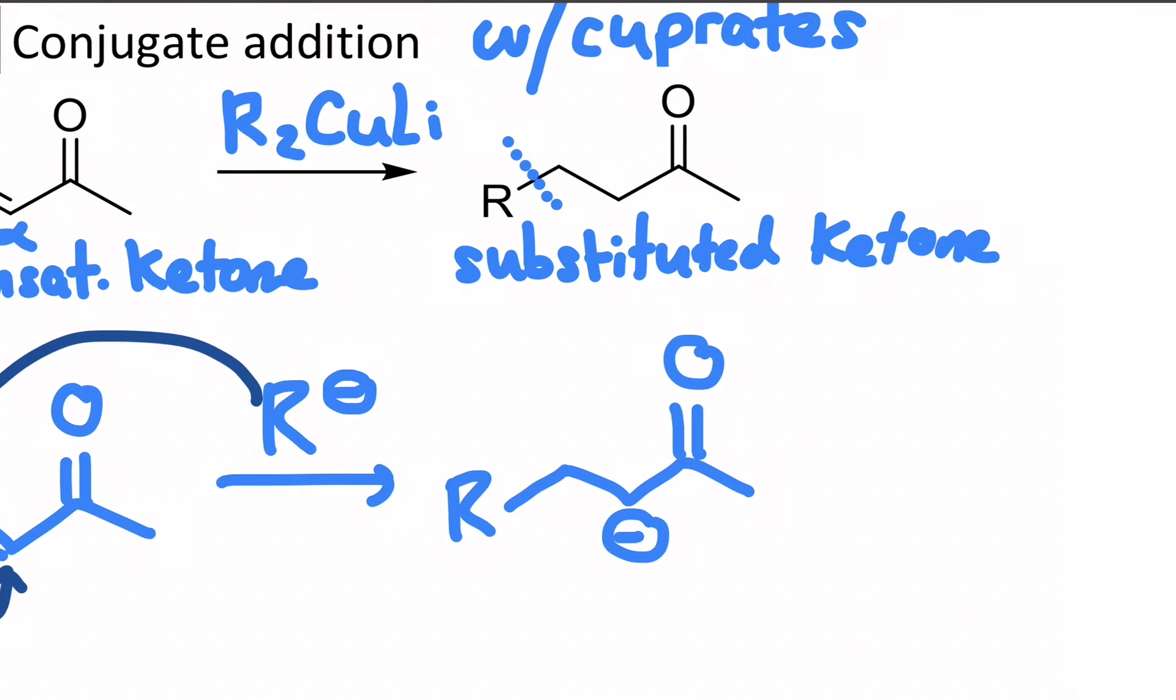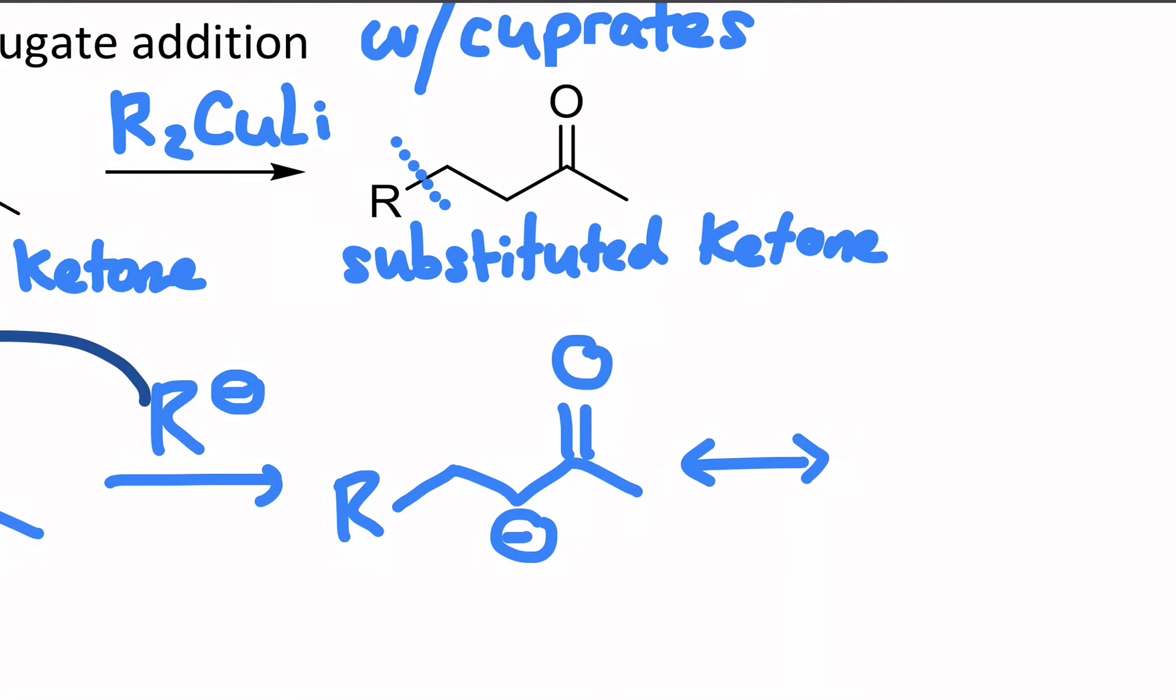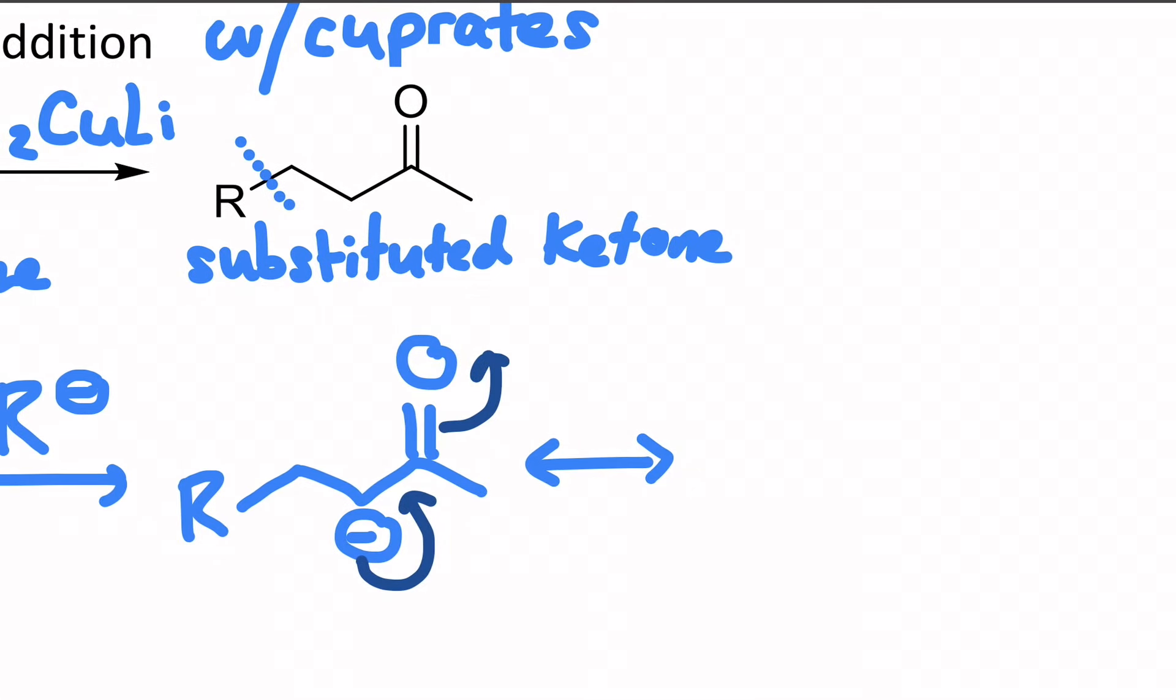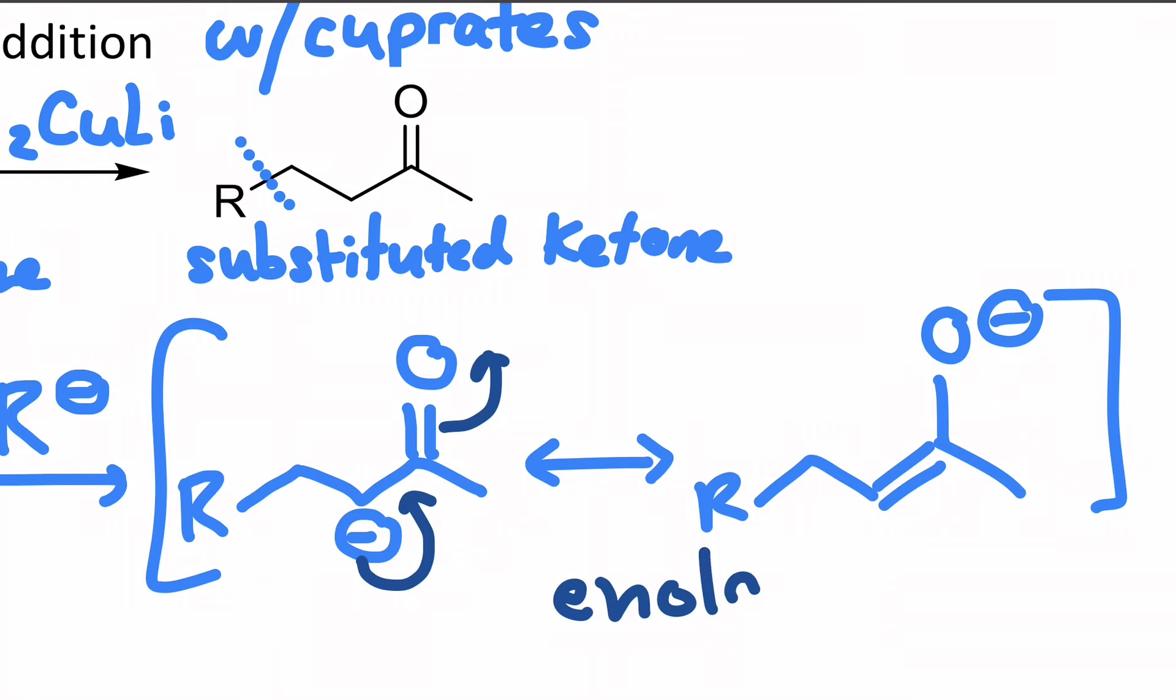And this is resonance stabilized. We can bring that negative charge to make what looks like an alkene and send the pi bond up to the oxygen, and then you get an intermediate that looks like that. This is called an enolate.